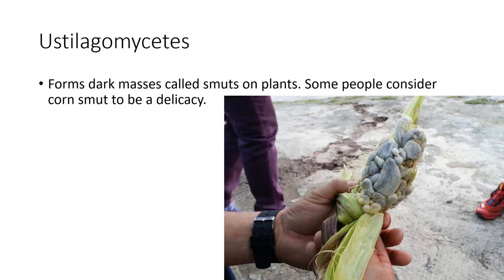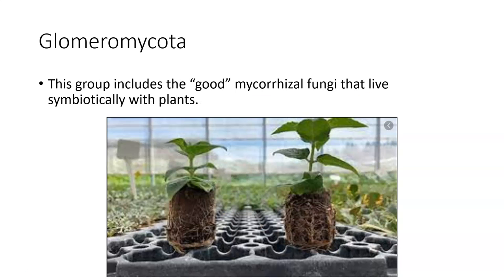Ustilaginomycetes causes smuts instead of rusts. This is corn smut — quite frankly, if I were to see an ear of corn that looked like that, I would throw it as far away as possible. But some people consider it a delicacy and will pay more money for an ear of corn with a smut on it. Glomeromycota is where our arbuscular fungi are — the mycorrhizae that form associations with plant roots are in this group, so this is beneficial fungus.